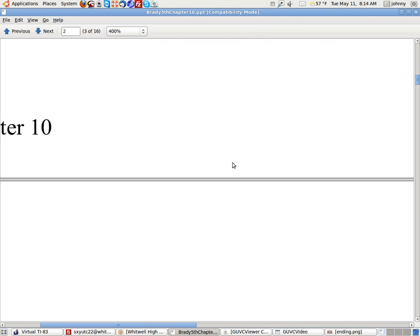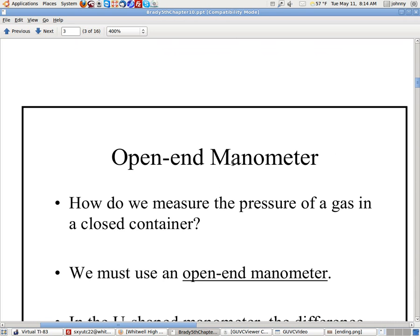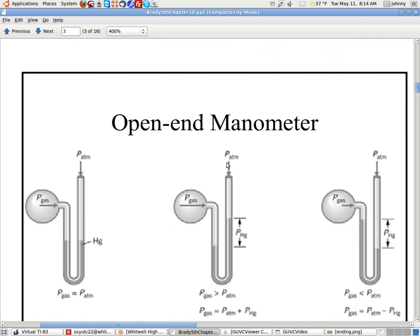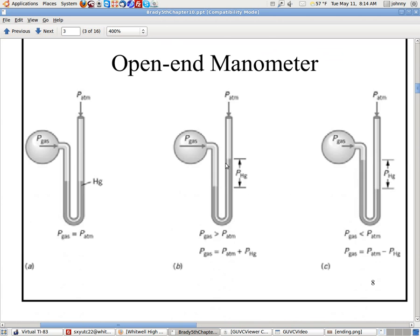Our calculation will involve an open-ended manometer, which allows us to determine if a gas is either higher or lower atmospheric pressure than its environment. Let's do a problem with an open-ended manometer, and here's a picture of one.